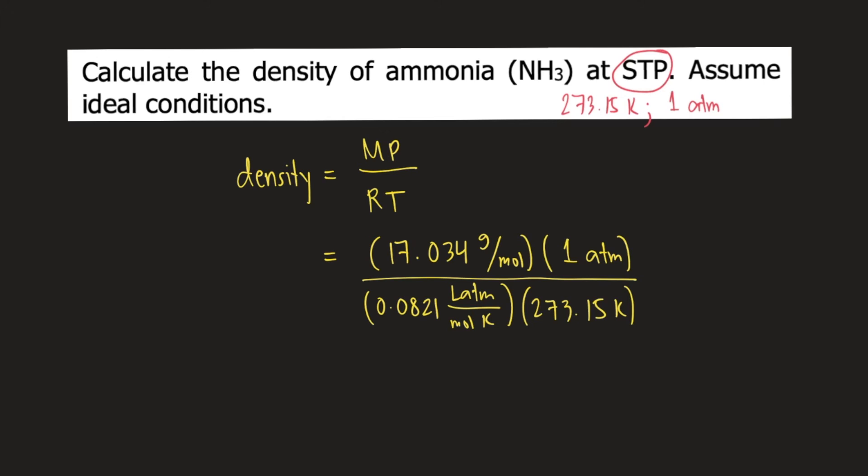Let's see how the units will cancel out: moles will cancel, ATM cancels out, and Kelvin cancels out. So the unit for density would be grams over liters, or grams per liter.